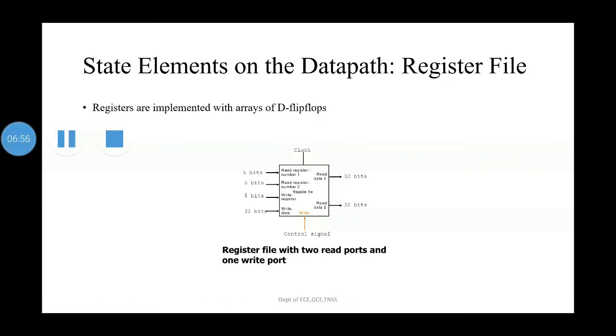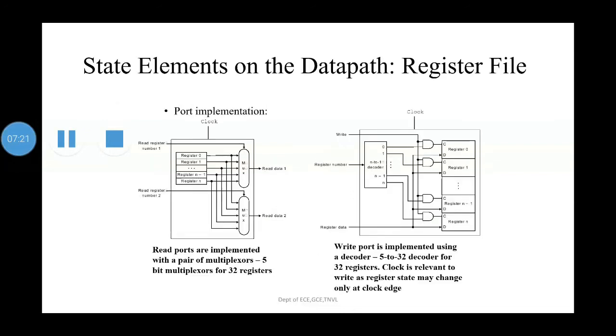We are using state elements on the datapath. For example, in register file we are using these state elements. Registers are implemented with arrays of D flip-flops. Here the register file with two read ports and one write port is implemented. The register file has a clock and a control signal. The read ports are implemented with a pair of multiplexers, 5-bit multiplexers for 32 registers. We need a pair of multiplexers because we need to select two read registers. Similarly, the write port is implemented using a decoder, that is a 5-to-32 decoder for 32 registers. Clock is relevant to write as register state may change only at the clock edge.